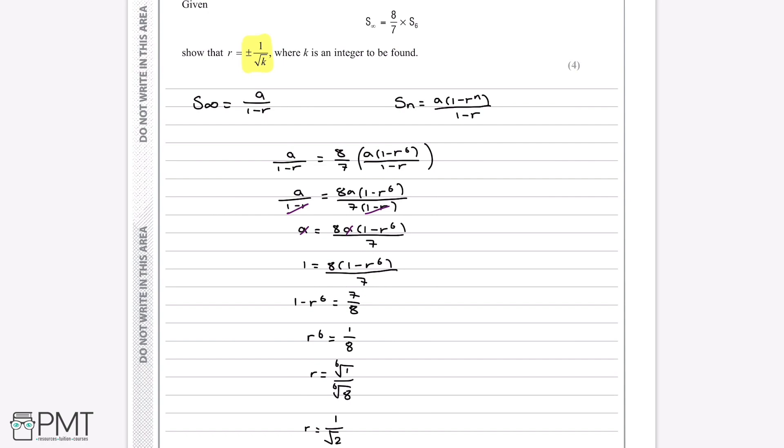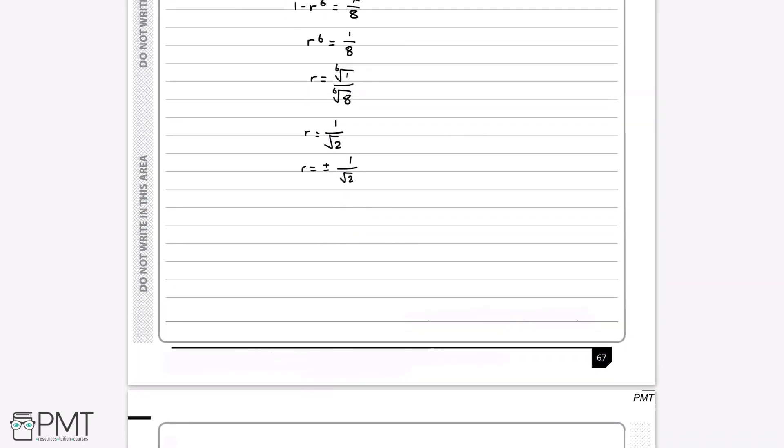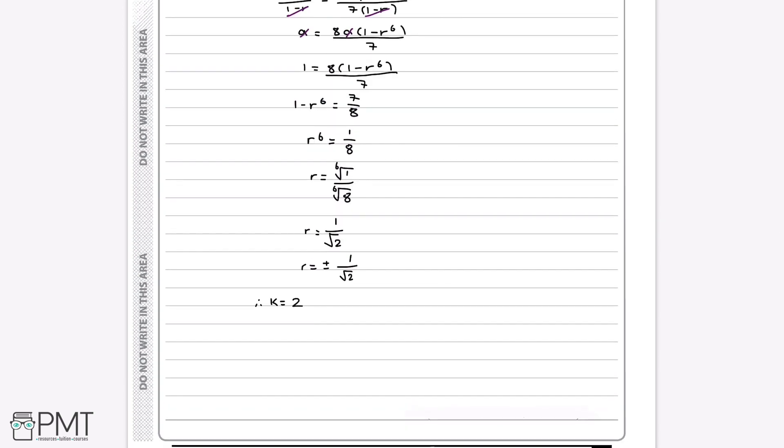So we can say, to be a bit more specific, that therefore k = 2. This will get us our final marks, because we've solved the question when we've told them that k = 2.